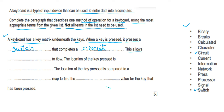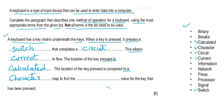This allows current to flow. The location of the key pressed is calculated and compared to a character map to find the binary value for the key that has been pressed.